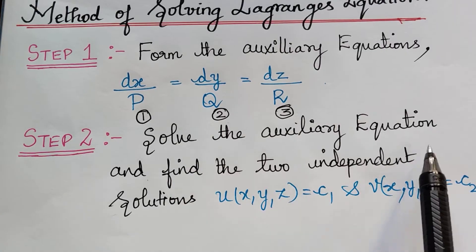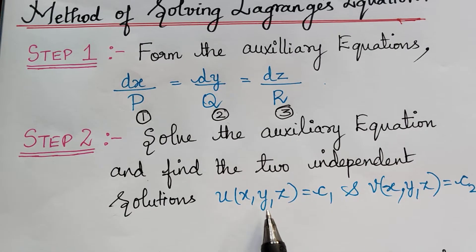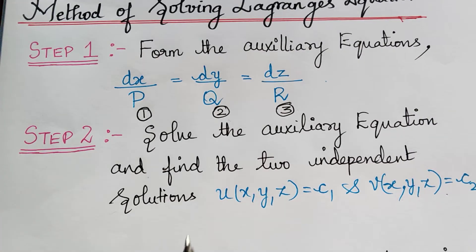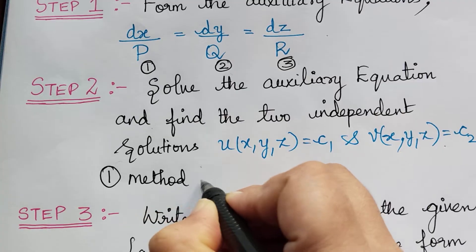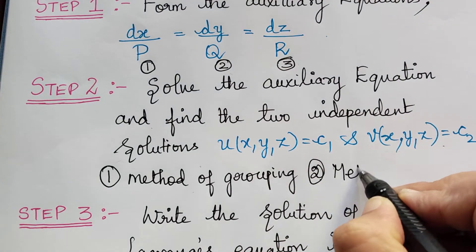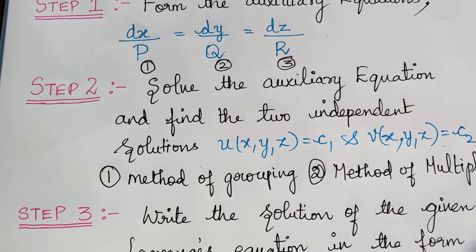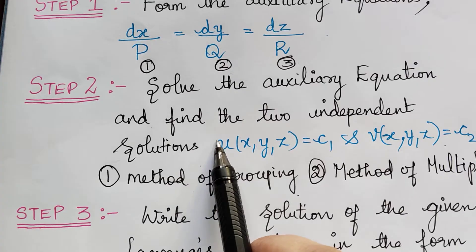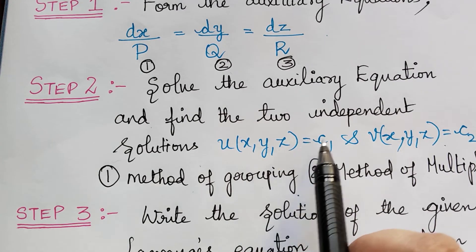Step 2 is to solve the auxiliary equation and find two independent solutions: u(x, y, z) = c1 and v(x, y, z) = c2. While solving the auxiliary equation we adopt two methods — the first is the method of grouping, and if that is not successful, the next method is the method of multipliers. After solving, we get solutions in terms of combinations like xy, yz, or xz, and those two solutions are taken as c1 and c2.